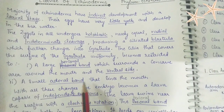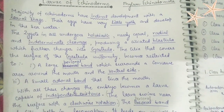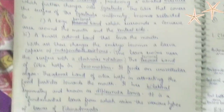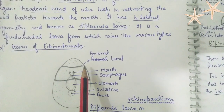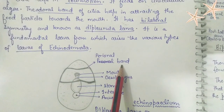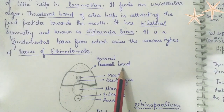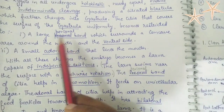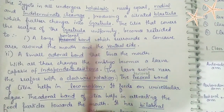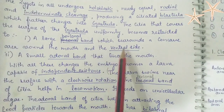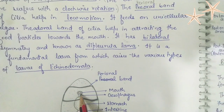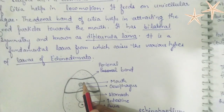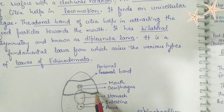In this diagram we can see the perioral band. This is the larval stage and this dark line represents the perioral band, which is the restricted area of the cilia covering the whole gastrula. A large perioral band surrounds a concave area around the mouth and the vestibule, where the esophagus, stomach, and all the digestive system are present.